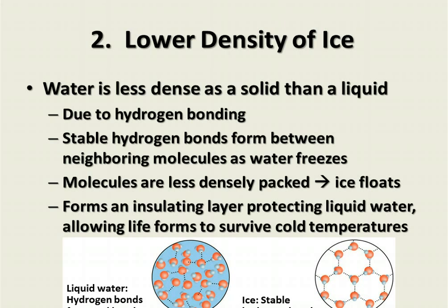Secondly, ice is less dense as a solid than as a liquid, and this is also because of the hydrogen bond. When water molecules freeze, they form stable hydrogen bonds between neighboring molecules, and since those stable bonds create a hexagon-shaped structure, the molecules are less densely packed than in liquid water, where they can move around and break and reform hydrogen bonds easily. Since ice is less densely packed, it floats. This is important to living things because it forms an insulating layer protecting the liquid water below, allowing fish and other aquatic life to survive cold temperatures, since the liquid water never drops below 0°C or 32°F.